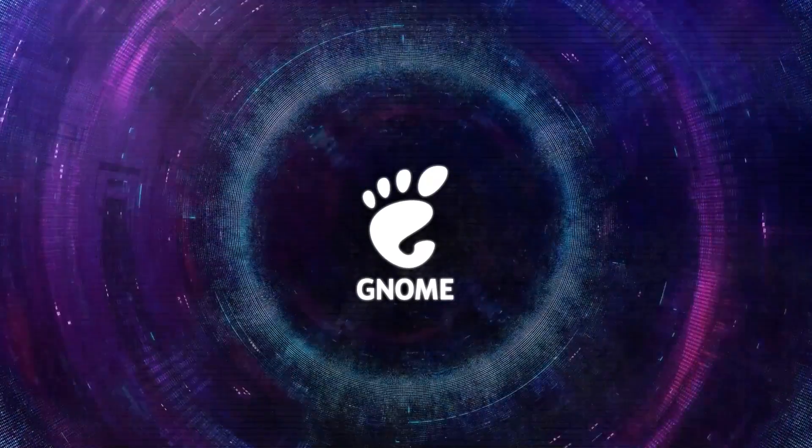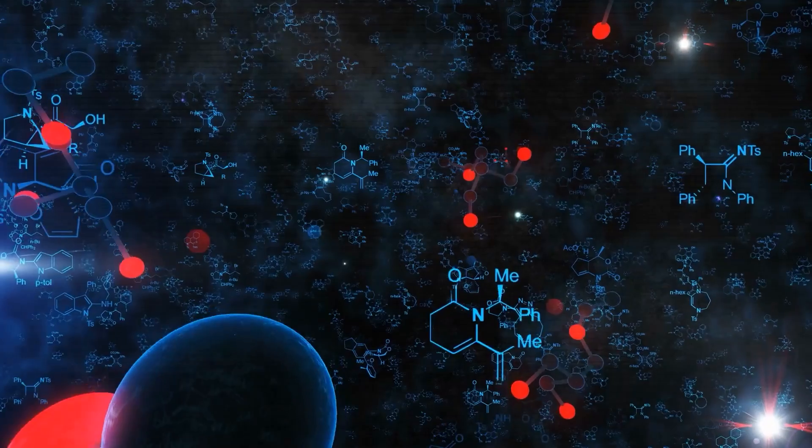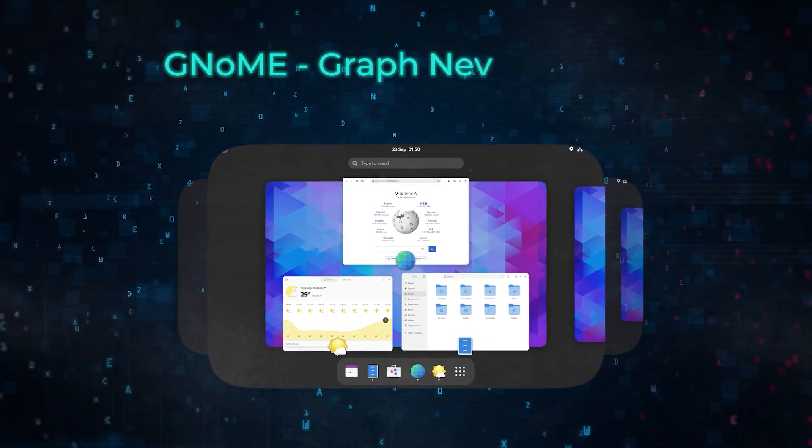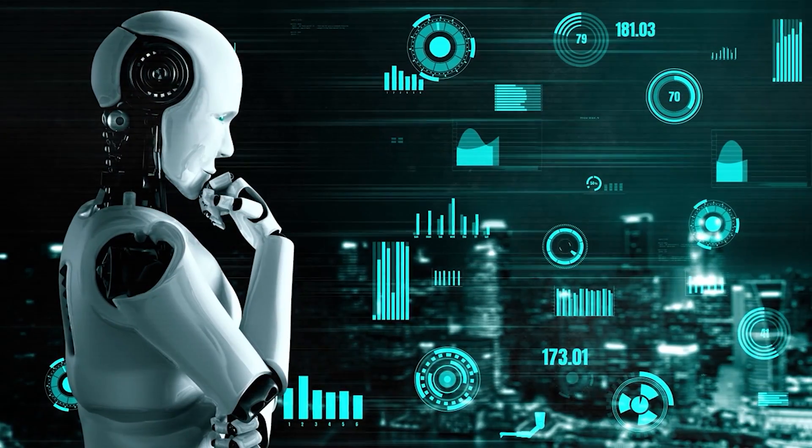GNoME is a tool designed for something pretty special in science: discovering new materials. Its full name is Graph Networks for Material Exploration, and it's all about using deep learning, a type of artificial intelligence, to figure out the structure and characteristics of new materials just from their chemical makeup.